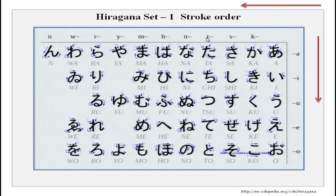For the ta series, in a similar manner: ta, chi, tsu, te, to. Chi and tsu are also a little different — these are also exceptions. So you need to remember these three exceptions: shi, chi, and tsu.